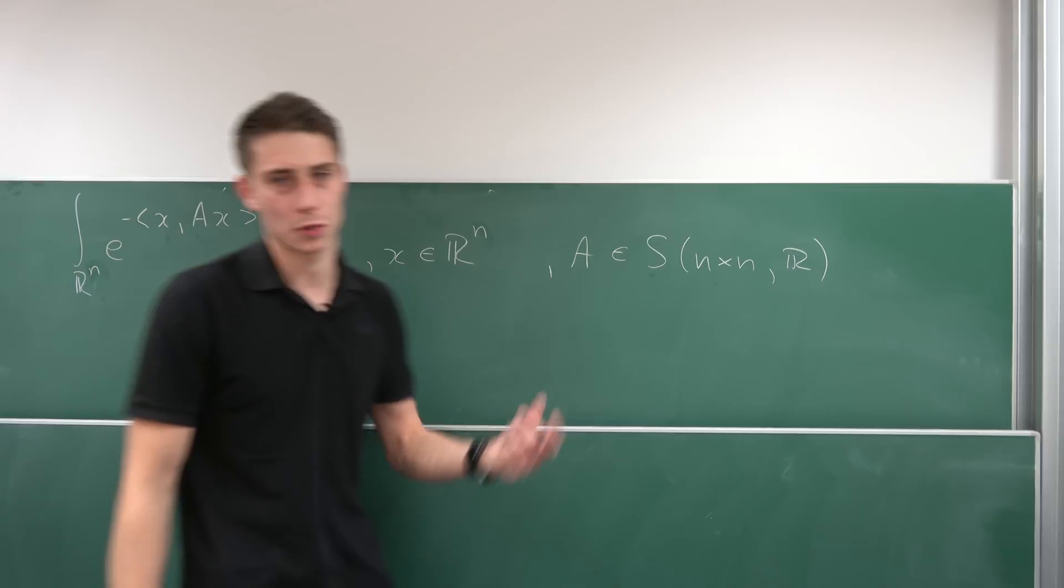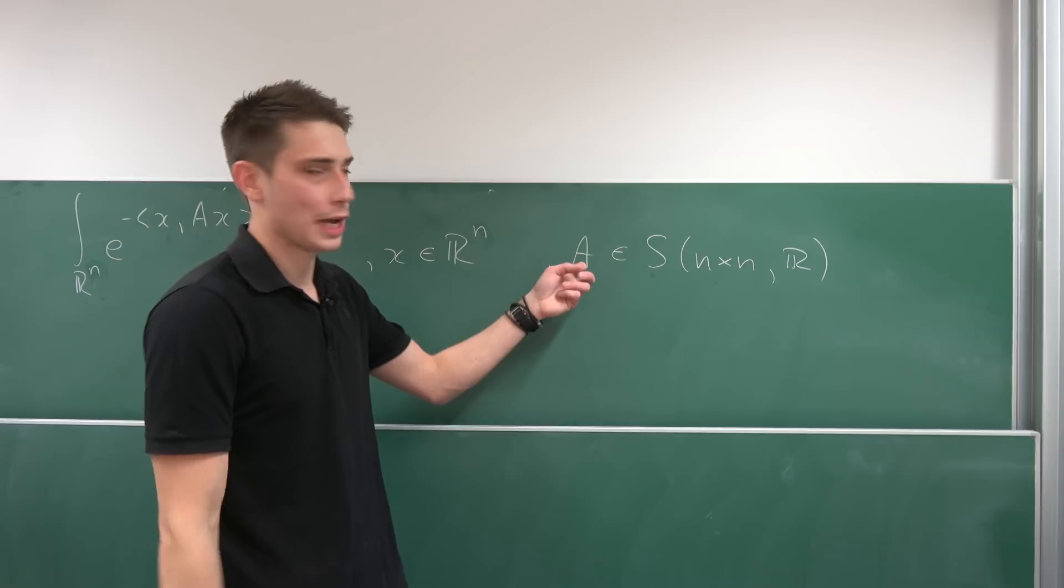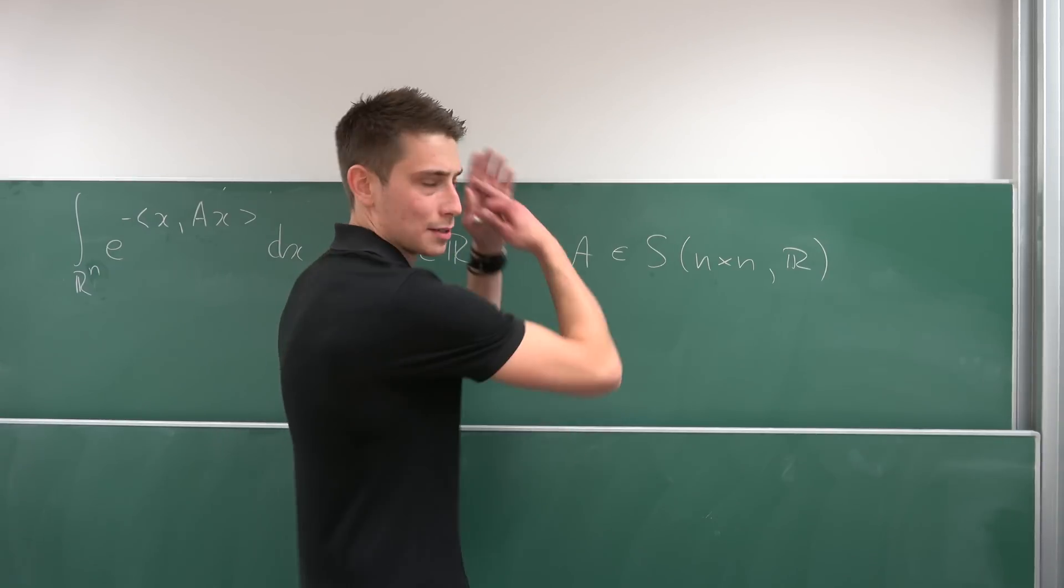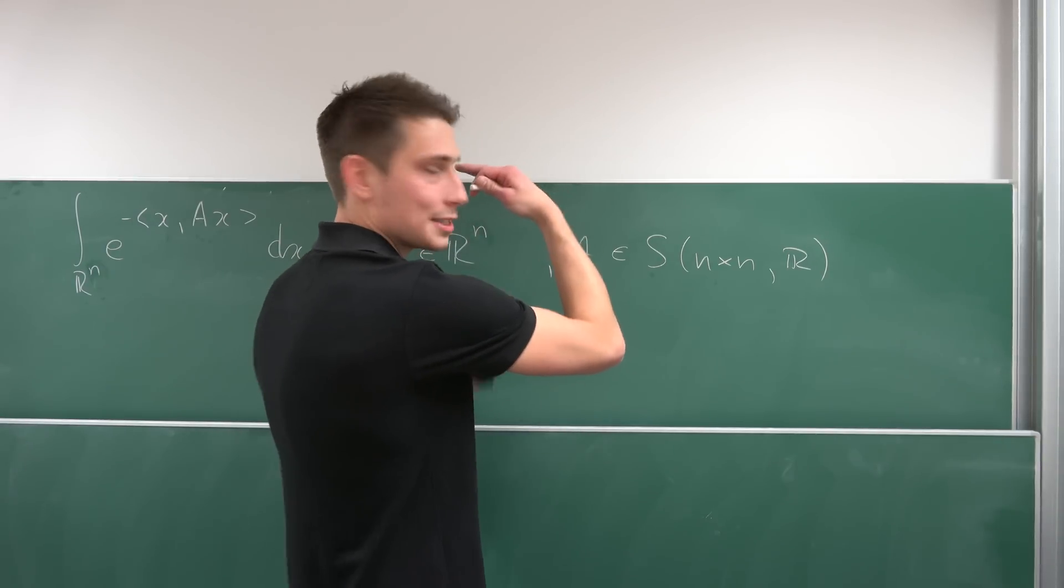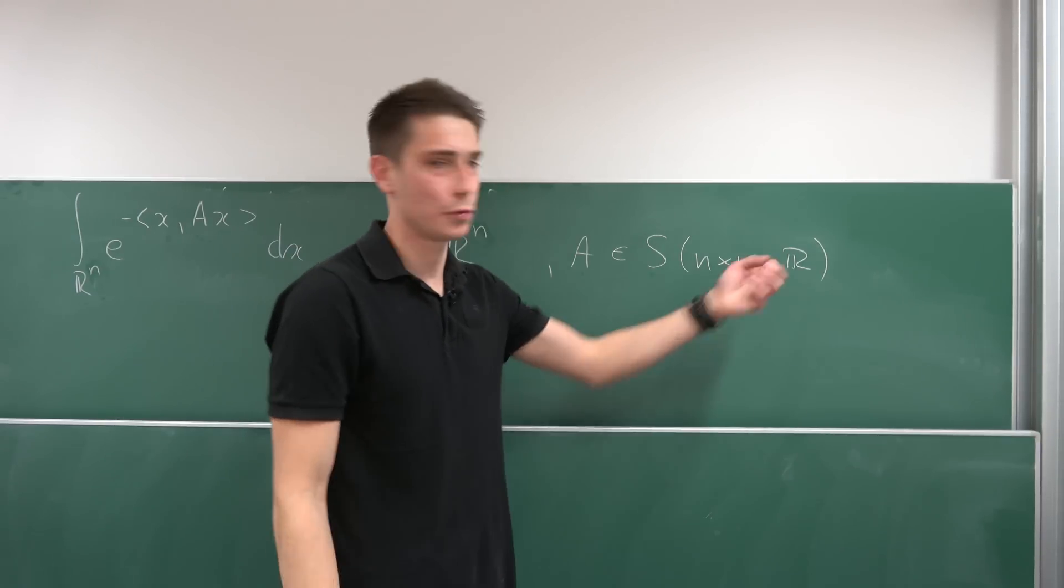And also, we have to place some restrictions on a. Otherwise, this right here wouldn't really work. So if we have a, we want it to be element of the symmetric matrices, meaning they are symmetric on those sides of the main diagonal, n times n with real number entries.